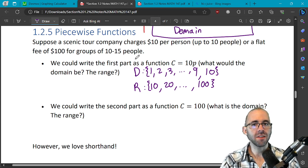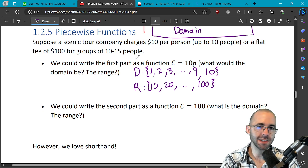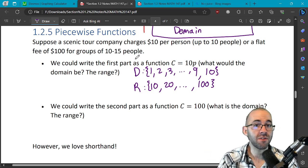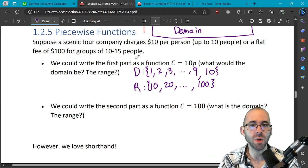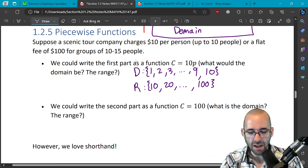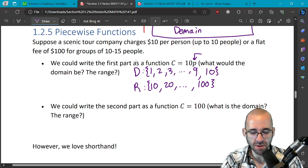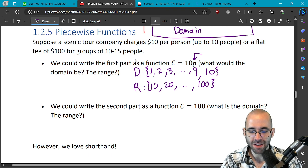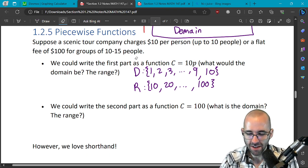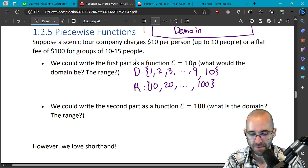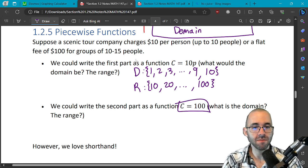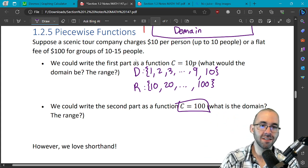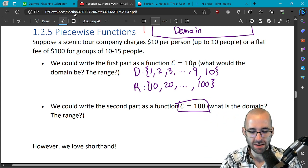We can also write the second part as a function. If you have ten to fifteen people, they're just always going to charge you a hundred dollars. The input is the people and the output is the cost. So the second part is actually going to look like this function. The second part just says the cost is always a hundred when your input is between ten and fifteen.